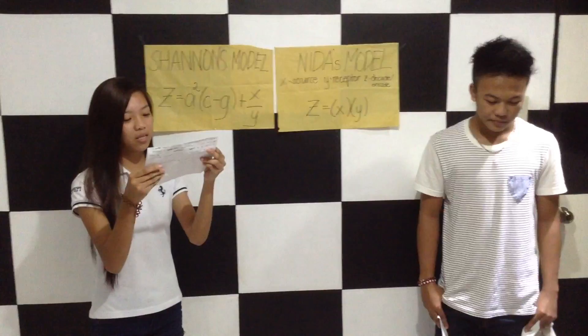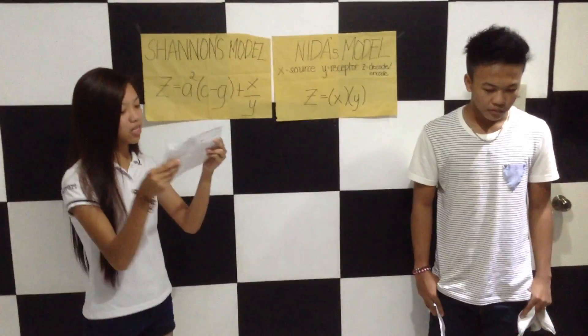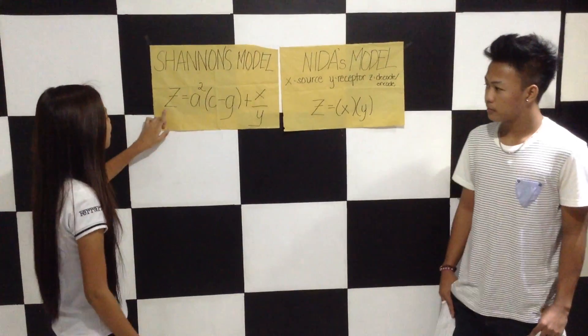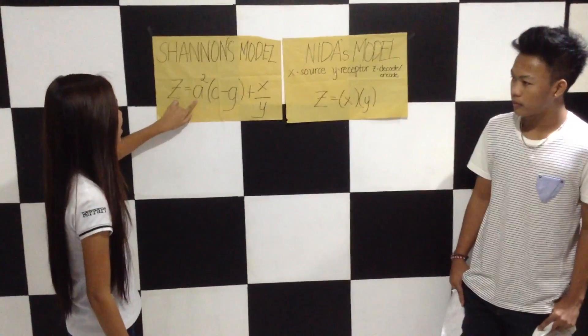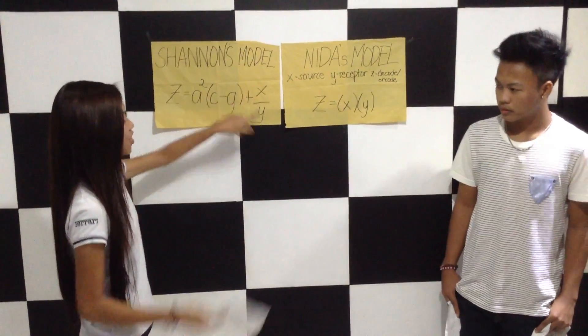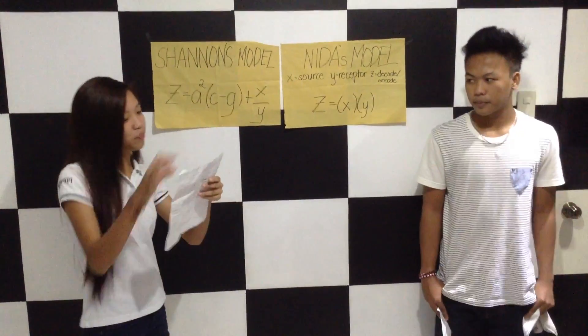Message or feedback is Y, and the destination is Z. The equation will be Z is equal to A-squared times C minus G plus X over Y.